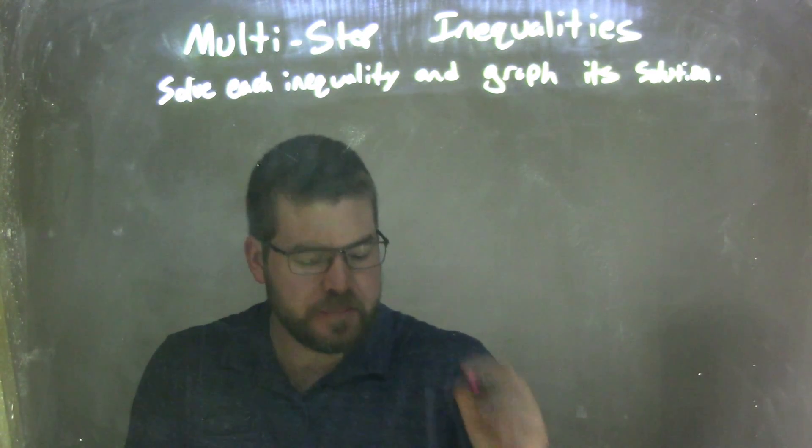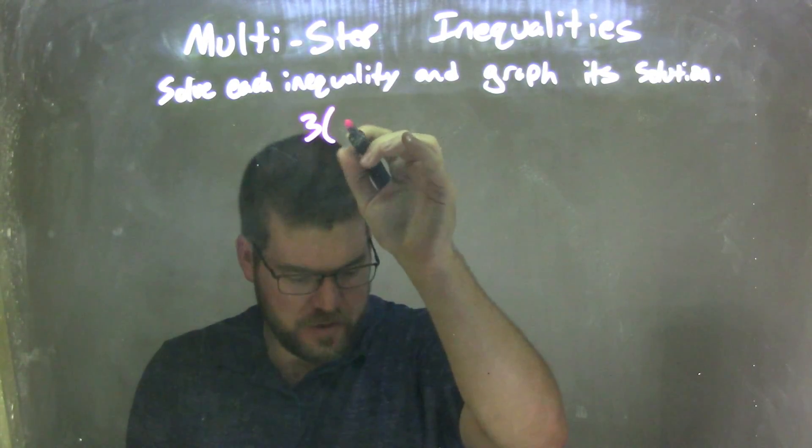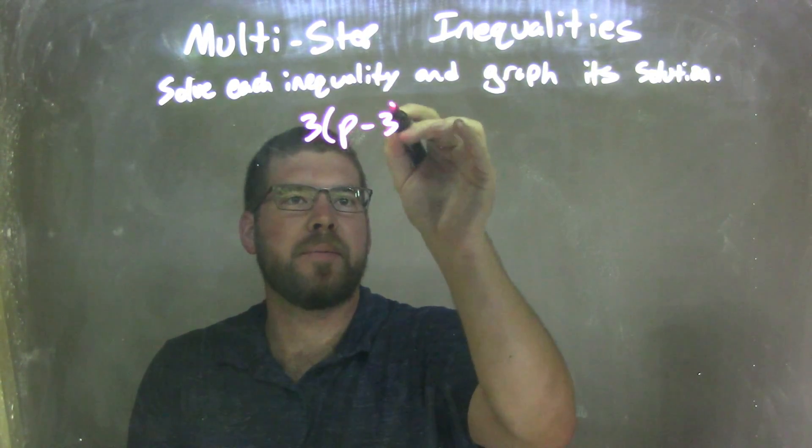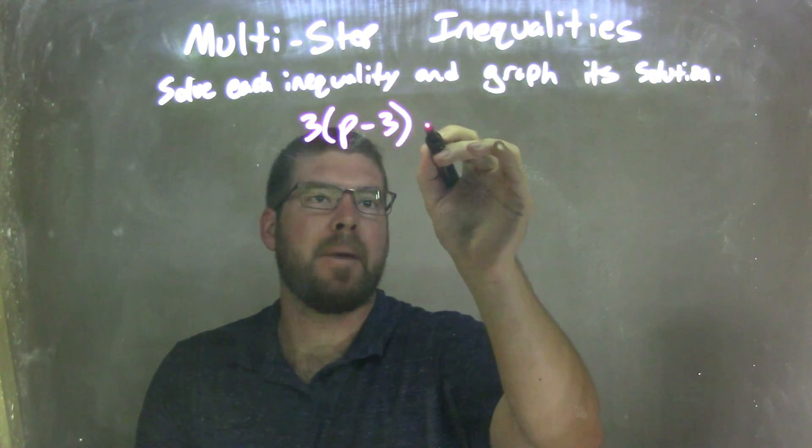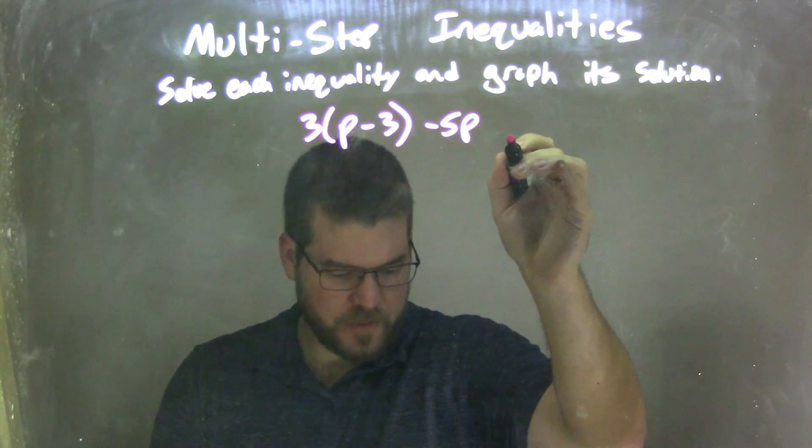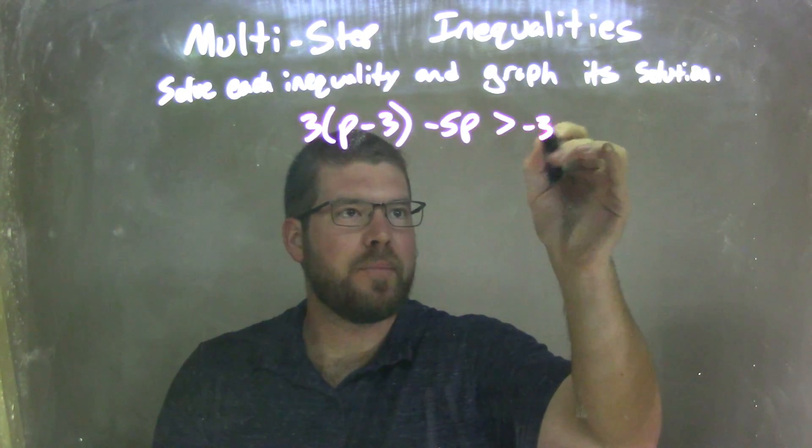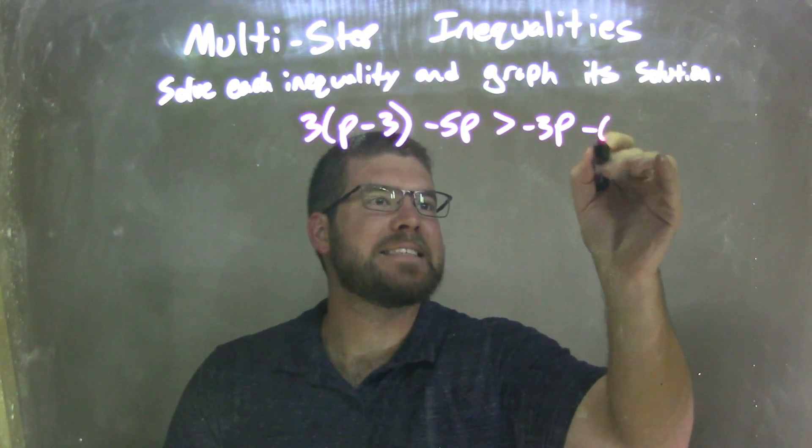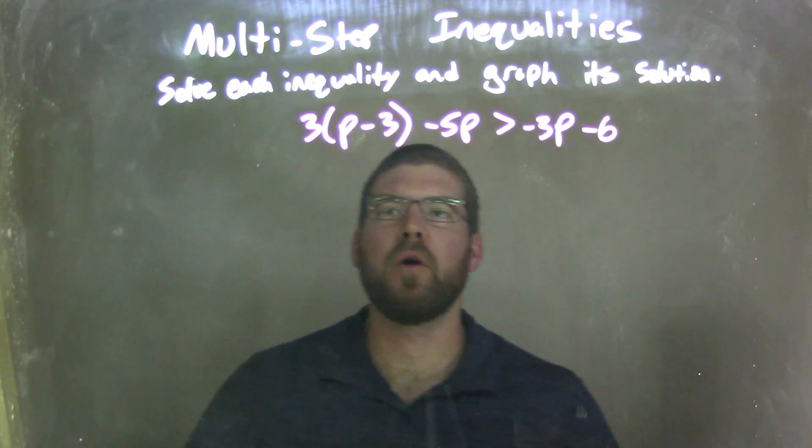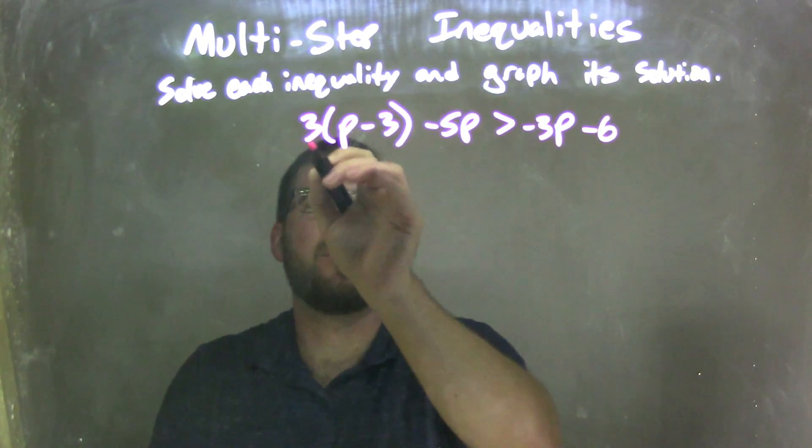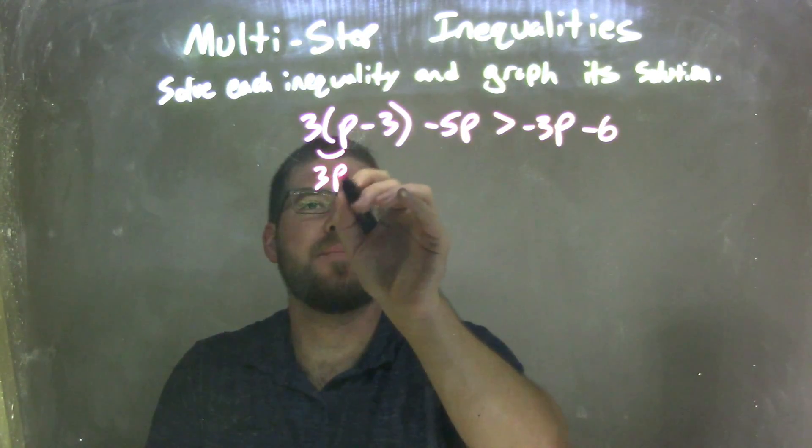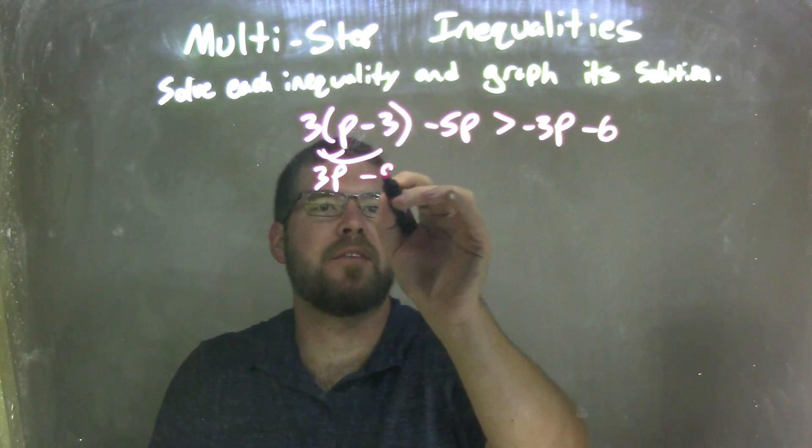So if I was given this inequality: 3 times (p minus 3) minus 5p is greater than negative 3p minus 6. Well, first thing I'm going to do is distribute that 3 across here. So 3 times p is 3p, and 3 times negative 3 is negative 9.